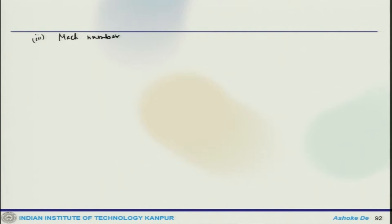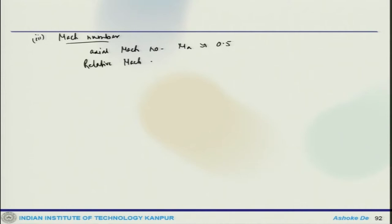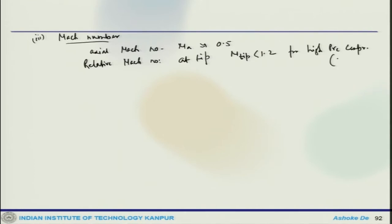Third is the Mach number. The axial Mach number M_A would be about 0.5 — typically high subsonic. There are also relative Mach numbers. At the tip, the relative Mach number would be less than 1.2 for a high pressure ratio compressor (HPC), and for a fan M_tip would be less than 1.8.